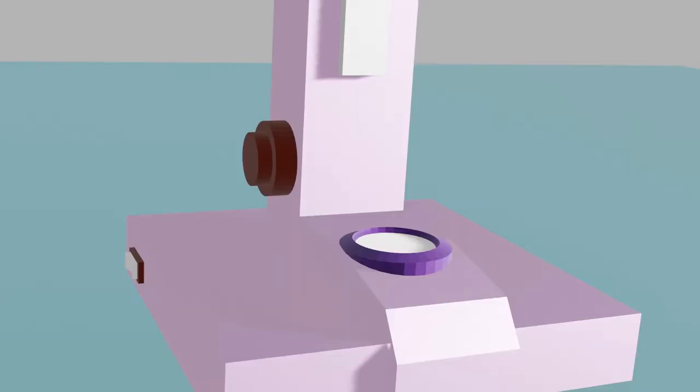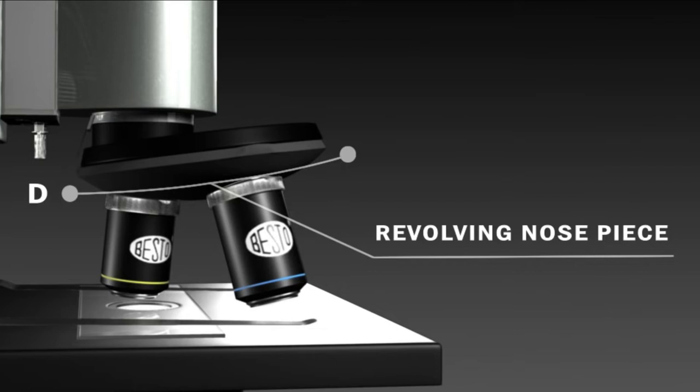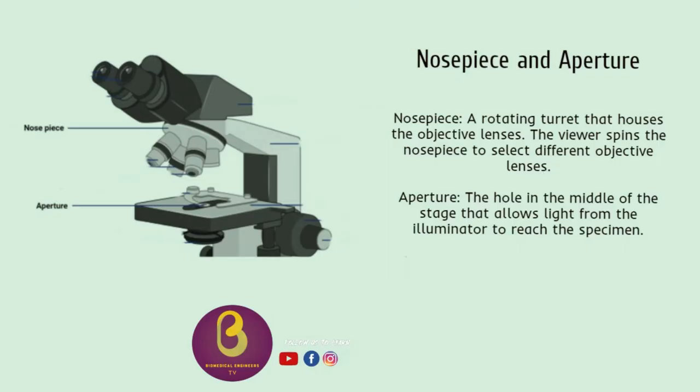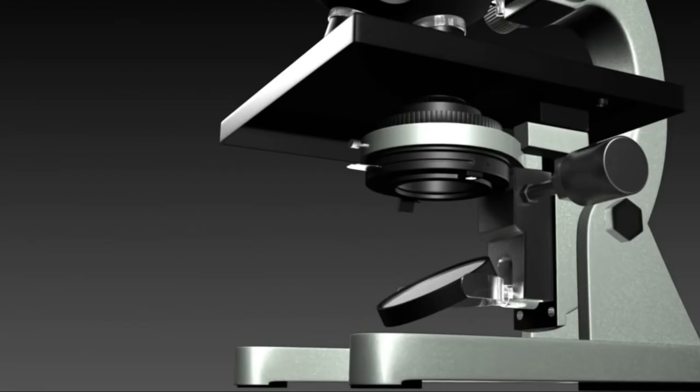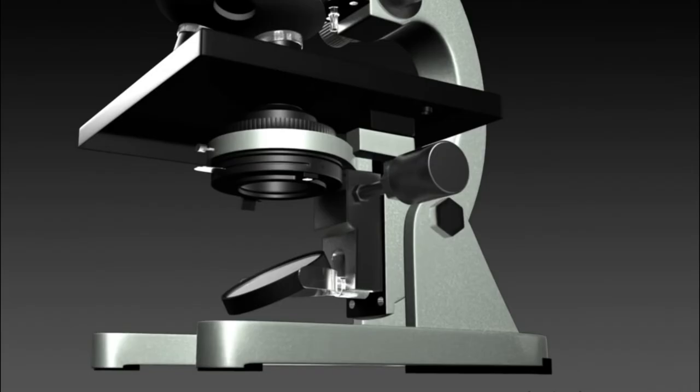The fifth component is nosepiece and aperture. The nosepiece is a rotating turret that holds the objective lenses. The viewer spins the nosepiece to select different objective lenses. The aperture is the middle of the stage that allows light from the illuminator to reach the specimen. The sixth components are the condenser, iris diaphragm, and the diaphragm. A condenser gathers and focuses light from the illuminator onto the specimen being viewed. The iris diaphragm adjusts the amount of light that reaches the specimen. The diaphragm is a five-hole disk placed under the stage. Each hole is of a different diameter. By turning it, you can vary the amount of light passing through the stage opening.